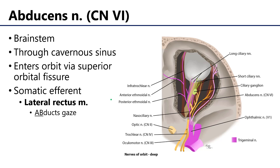Next up, we have the abducens nerve — so we are skipping any contribution from the trigeminal nerve for the time being. The abducens nerve, or cranial nerve 6, originates in the brainstem, and it is unique in that it travels through the cavernous sinus, meaning it is very vulnerable to a cavernous sinus thrombosis. It then enters the orbit through the superior orbital fissure, and it is somatic efferent to the lateral rectus muscle. Recall that the abducens abducts gaze.